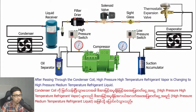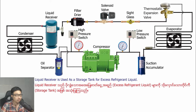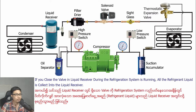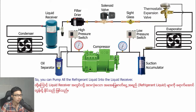After passing through the condenser coil, high pressure, high temperature refrigerant vapor changes into high pressure, medium temperature refrigerant liquid. The liquid receiver is used as a storage tank for excess refrigerant liquid. If you close the valve on the liquid receiver during the refrigeration system is running, all the refrigerant liquid is collected into the liquid receiver.